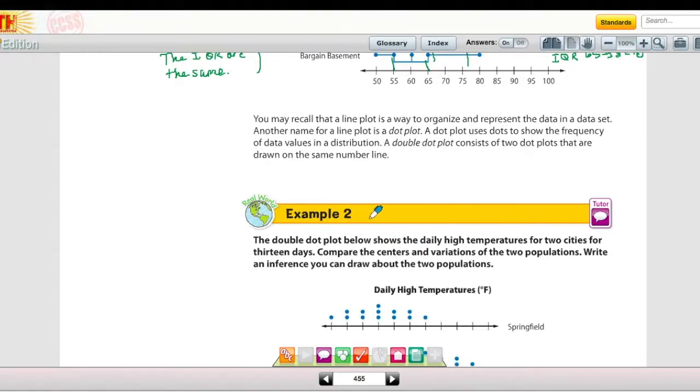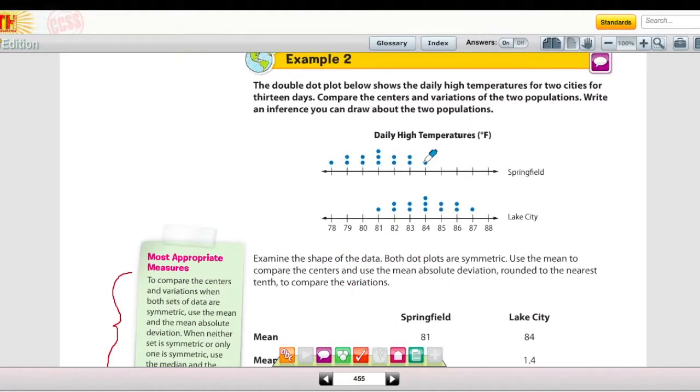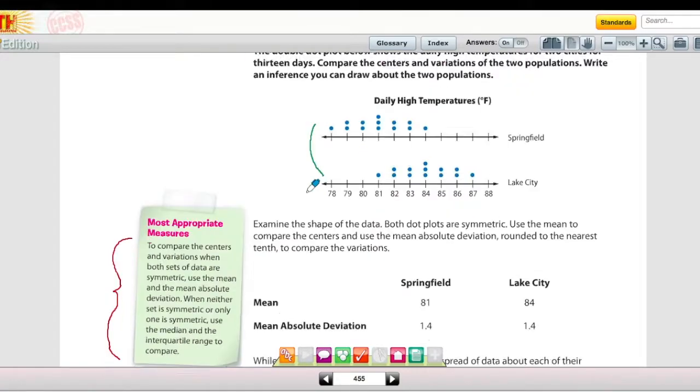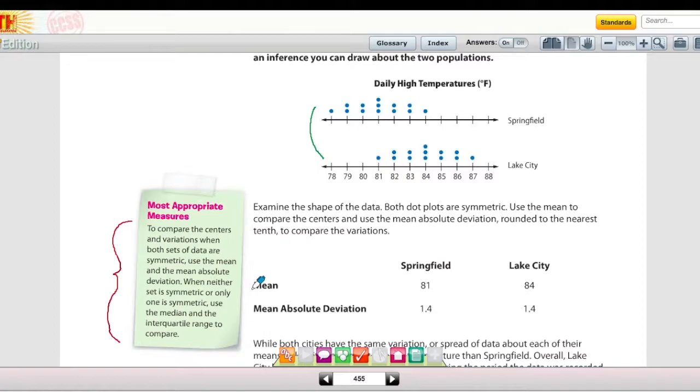Remember that another way to organize data is by using a line plot or a dot plot. A dot plot uses dots to show the frequency of data values and distribution. Down here at the bottom we have a double dot plot comparing the daily high temperatures in Springfield and Lake City. Those two dot plots can be translated to numbers, and we can find the mean of that data and also find the mean absolute deviation. We're going to do that on the next problem. Before I do that though, this is really important to remember.